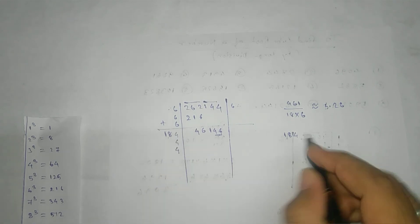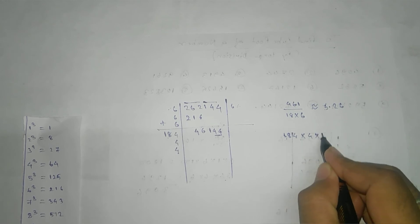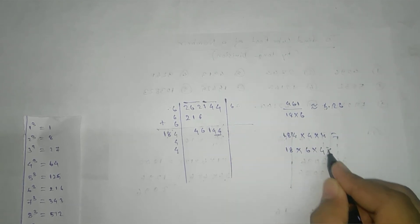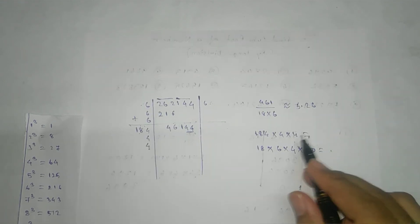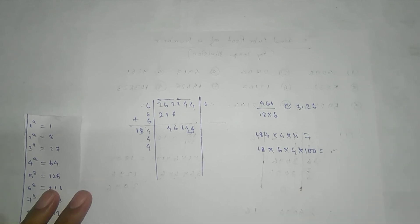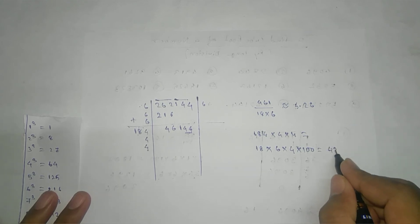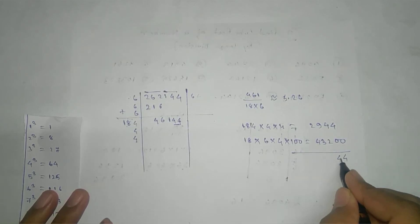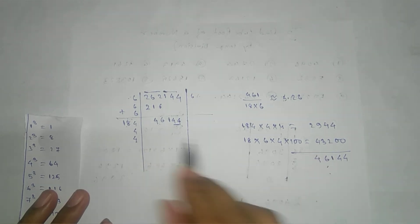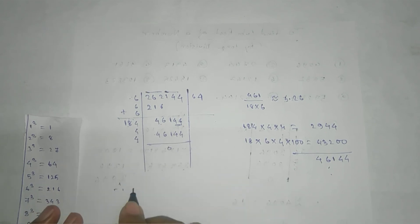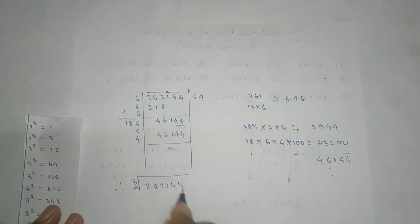So we take 4, 4 here. Then 184 into 4 into 4: one result. Another: 18 into 6 into 4, and then 100 multiplied. Multiplying with the calculator, we get 43200 and 29440. Adding these: 4, 1, 6, 4 — which is the same as 41644. Remainder is 0. Therefore, cube root of 262144 is 64.